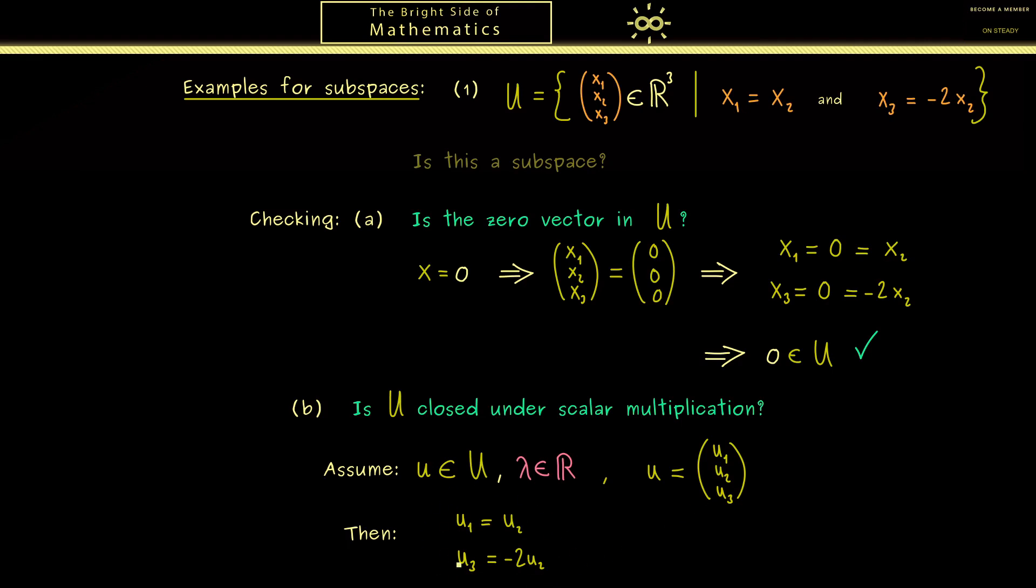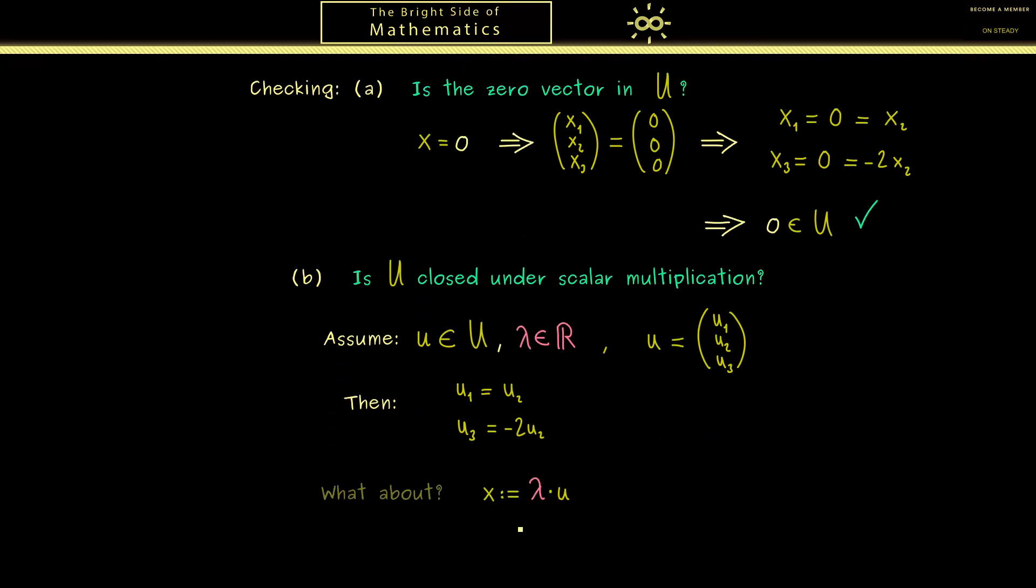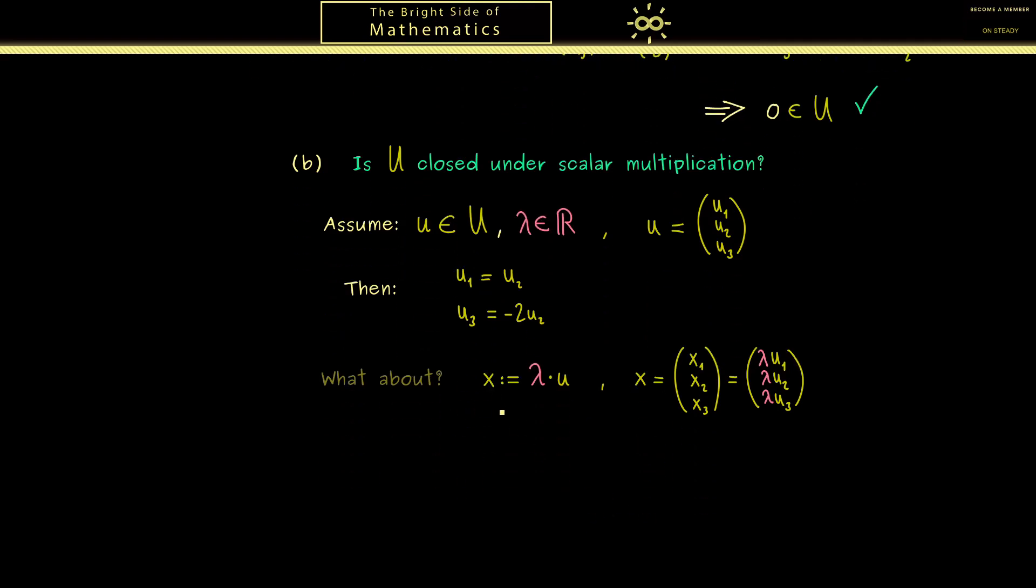Then we can immediately conclude that the 2 equations from above are satisfied for these components. In other words, u₁ is equal to u₂ and u₃ is equal to minus 2u₂. This has to be satisfied by the assumption that u is in the set U. Now the question is what can we say about the scaled vector lambda times u. Maybe we simply call this one x. Hence we know for the 3 components x₁, x₂, x₃, they are equal to lambda u₁, lambda u₂, lambda u₃ respectively.